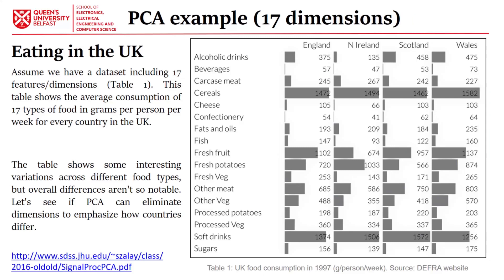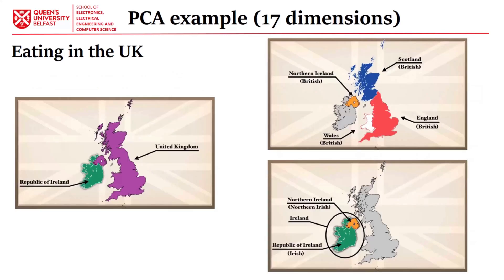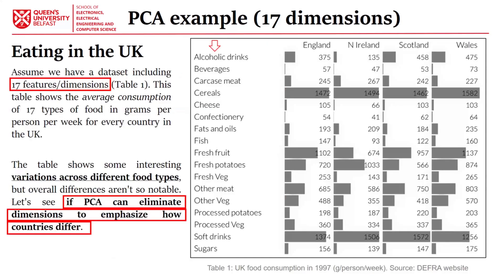I explained the details of the eating-in-the-UK example. We had four samples or observations — four countries: England, Northern Ireland, Scotland, and Wales — along with a number of features. The question was whether we could use PCA to differentiate these countries according to these features.